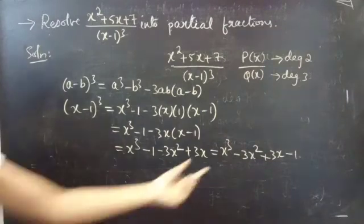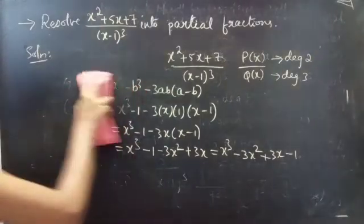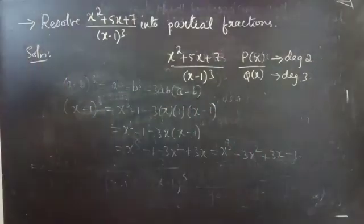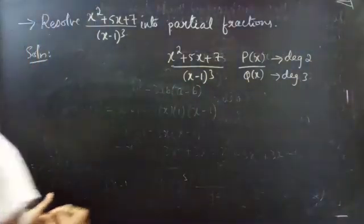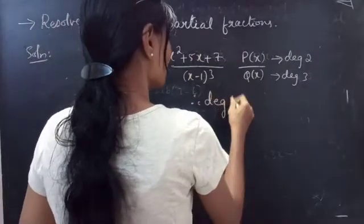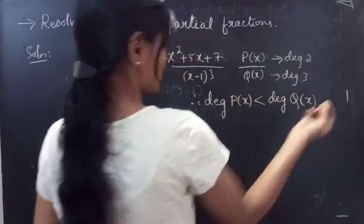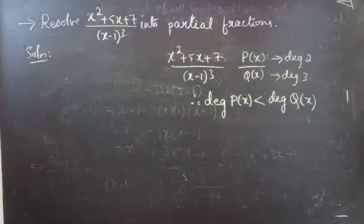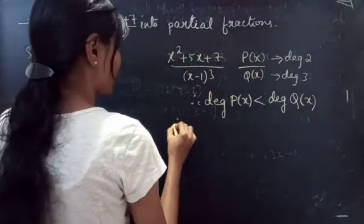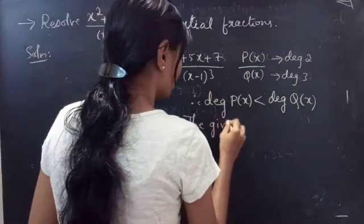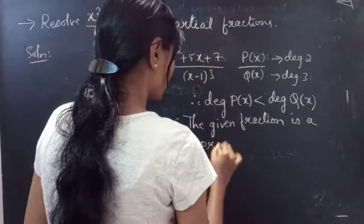Now it is clear that the degree of Q(x) is 3. So the degree of P(x) is less than the degree of Q(x) — 2 is less than 3. From this we can say that the given fraction is a proper fraction.